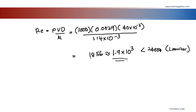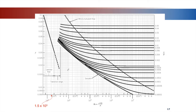For laminar flow we need to find the friction factor. We have Re equals 1.9 times 10³, which is between 10³ and 2 times 10³ on Moody's chart. To find the exact value, take a ruler and measure the length of the segment from 10³ to 2 times 10³. Then use interpolation to find where 1.9 times 10³ falls on that segment.